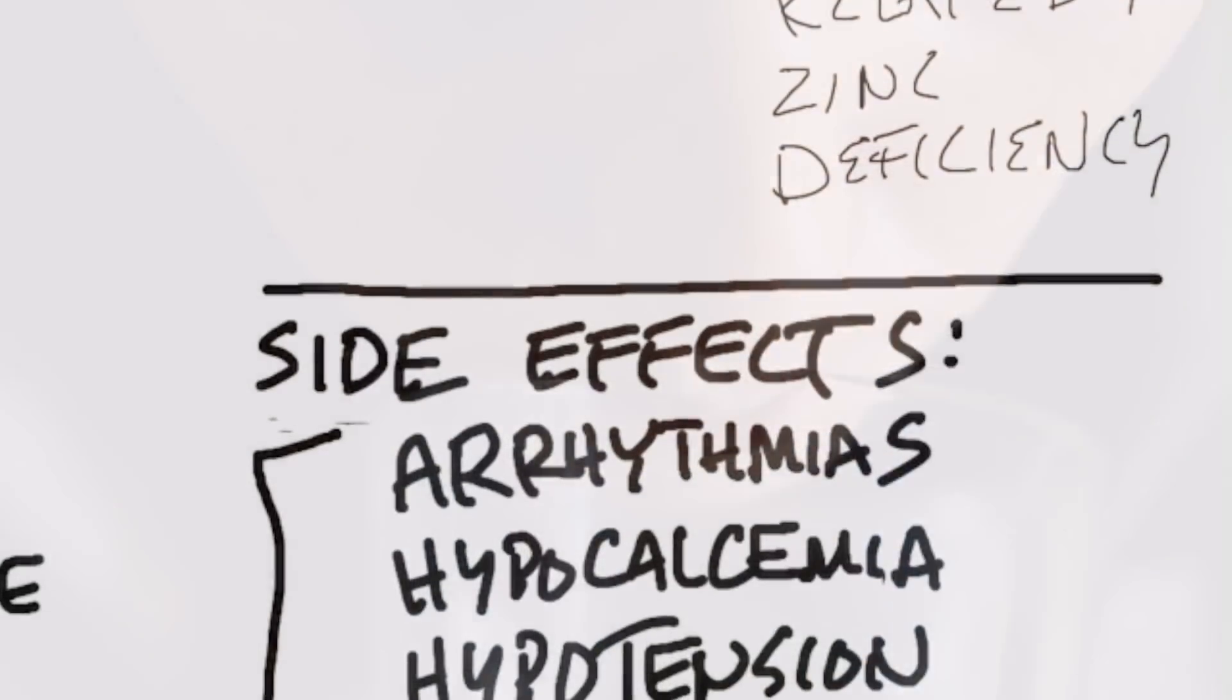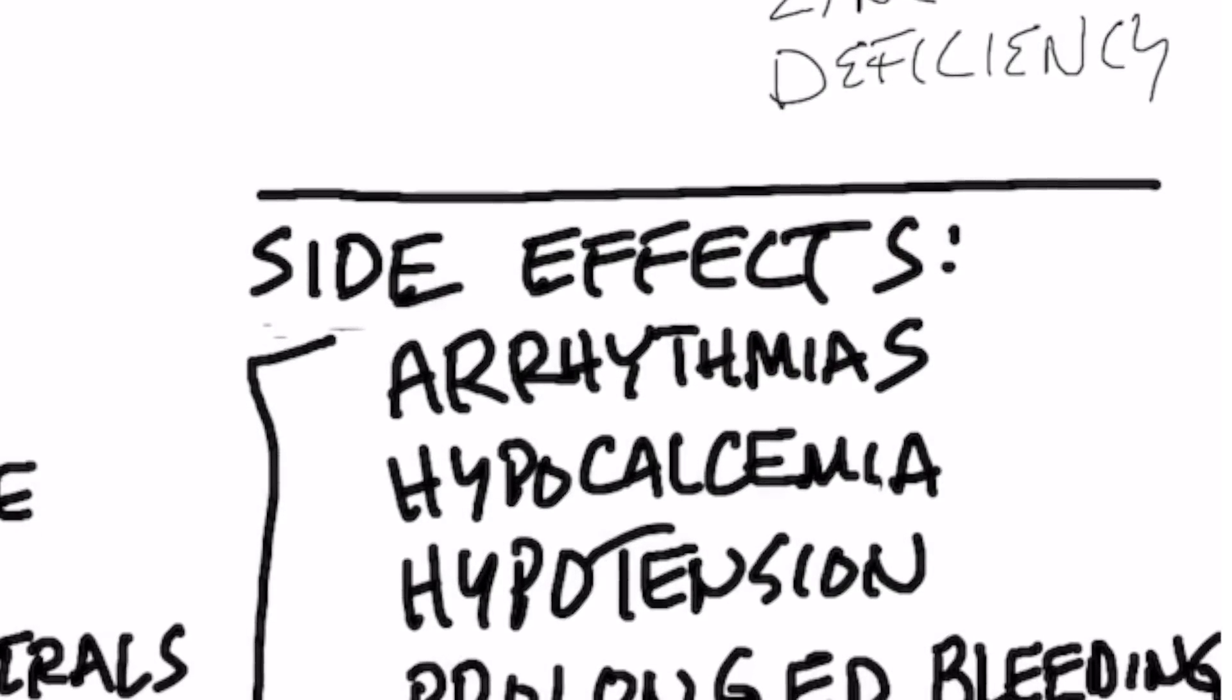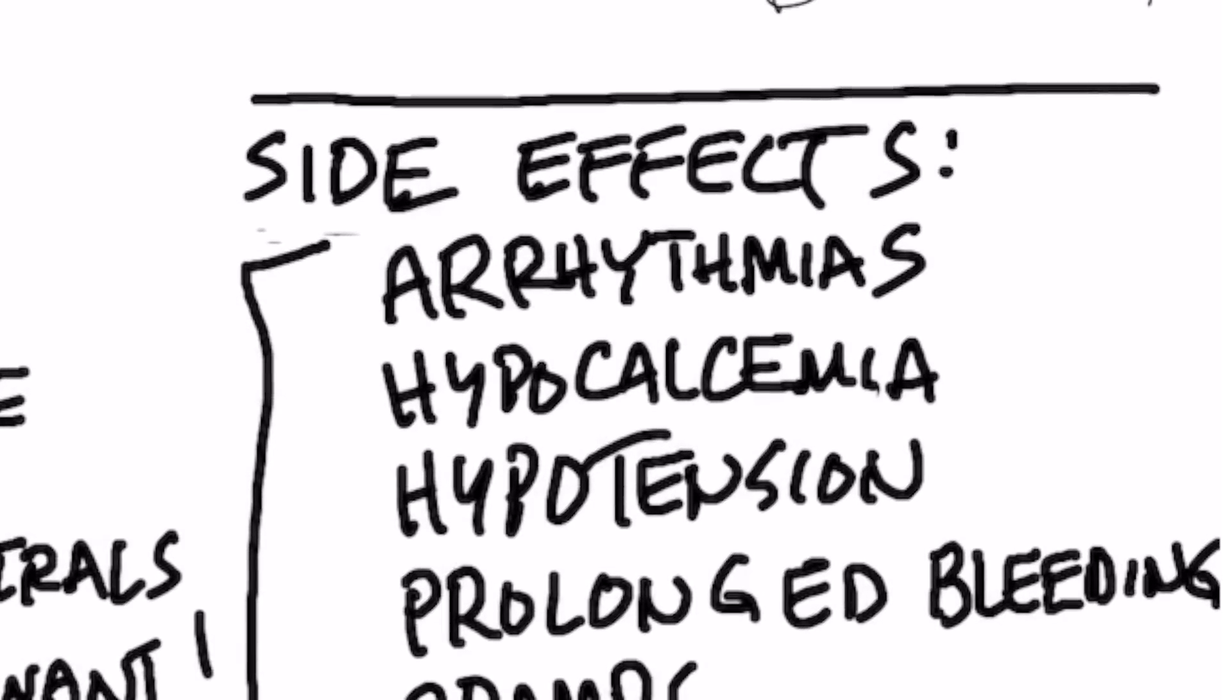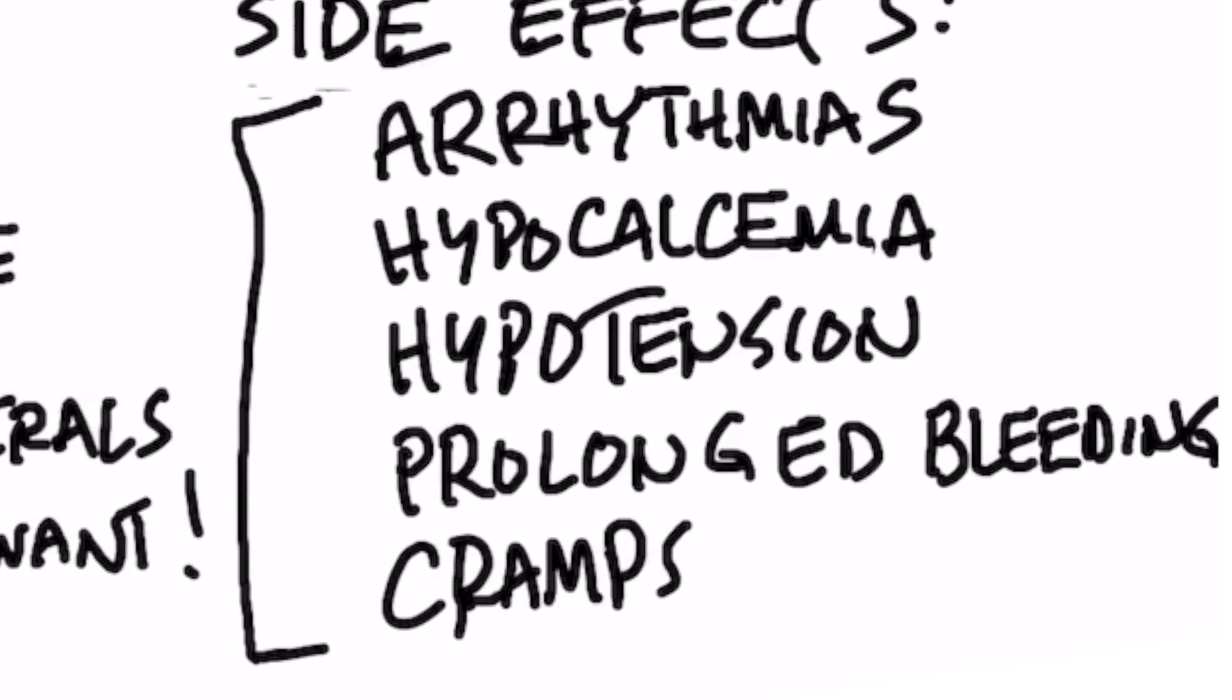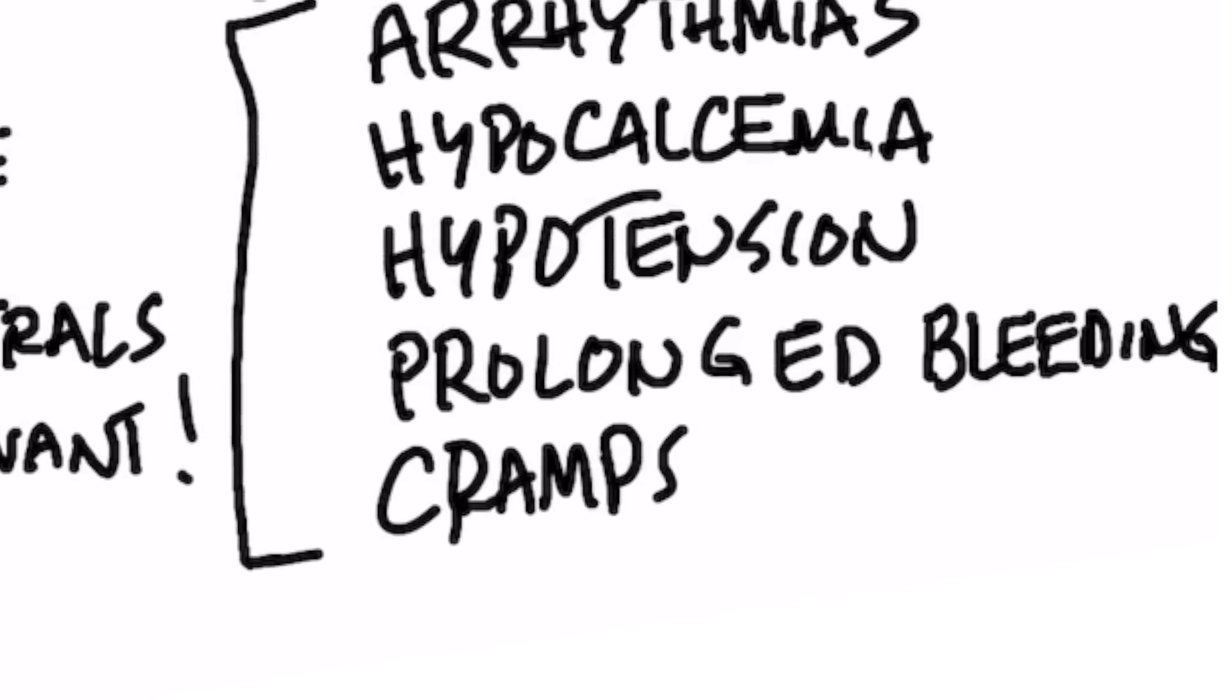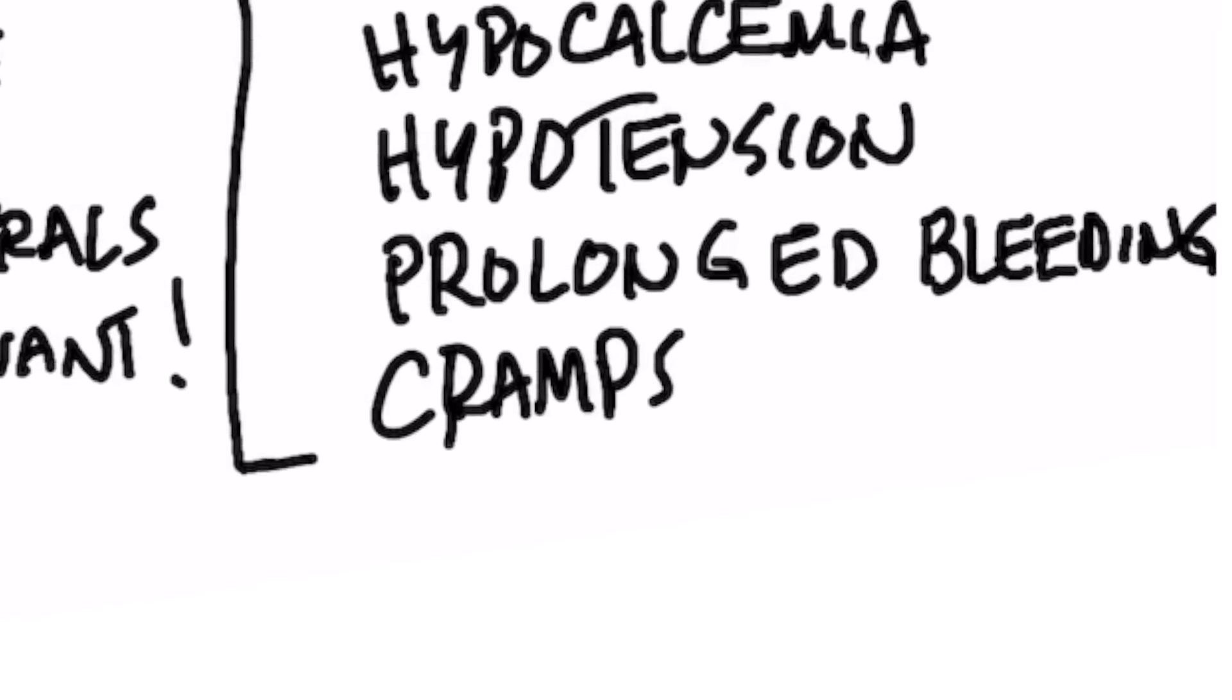Some side effects could be arrhythmias because it's pulling out magnesium and potassium, hypocalcemia. You would want to regulate this by not taking too much EDTA. You take just certain amounts. You wouldn't want to take it every single day for a long period of time. It can create hypotension because it's pulling out salt. It can also potentially cause prolonged bleeding and cramps. Make sure you put back in the minerals that you want and not just pull everything out.